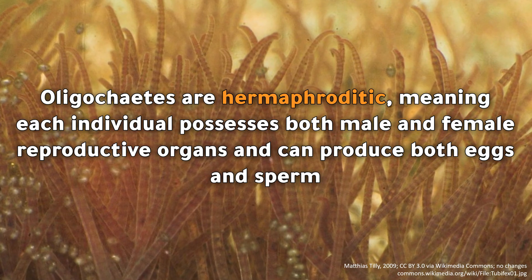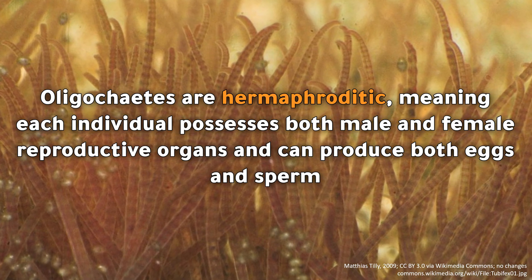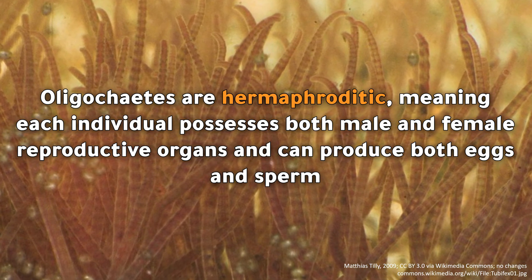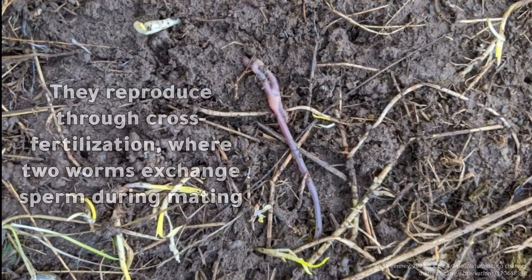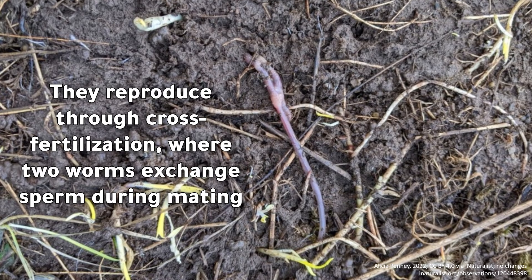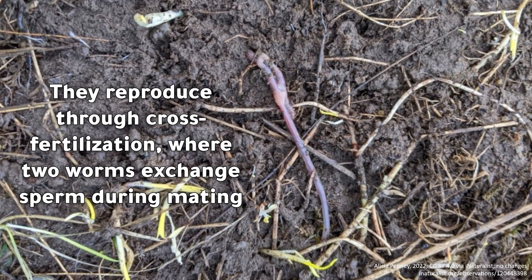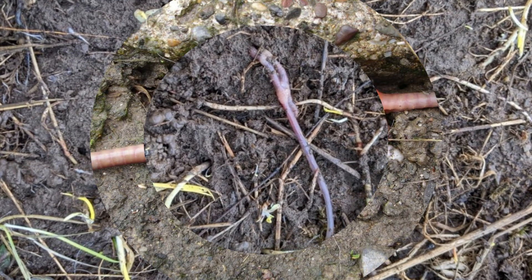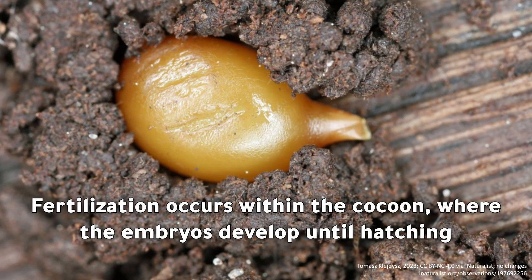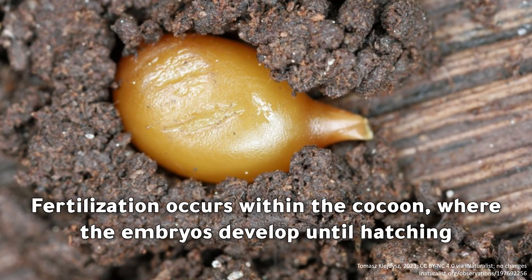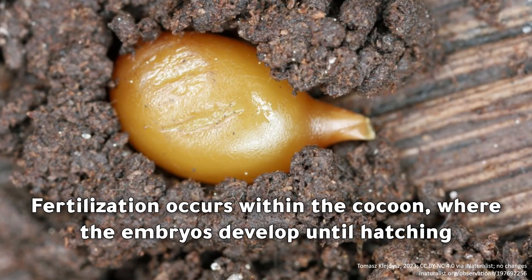Oligochaetes are hermaphroditic, meaning each individual possesses both male and female reproductive organs and can produce both eggs and sperm. They reproduce through cross-fertilization, where two worms exchange sperm during mating. The clitellum secretes mucus to facilitate copulation and forms a protective cocoon that receives the eggs and sperm. Fertilization occurs within the cocoon, where the embryos develop until hatching.